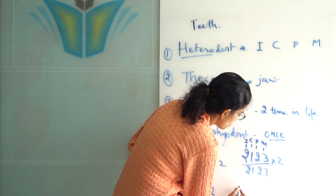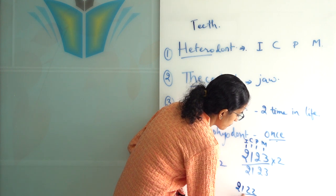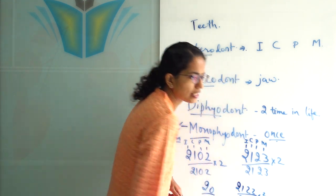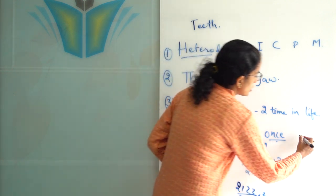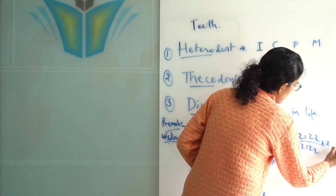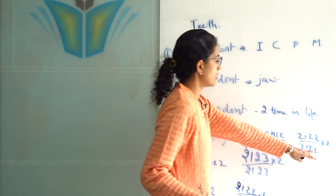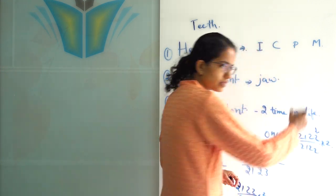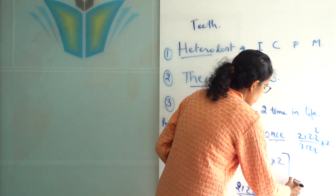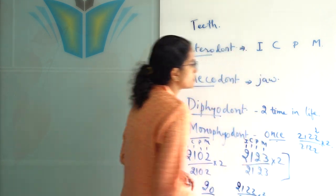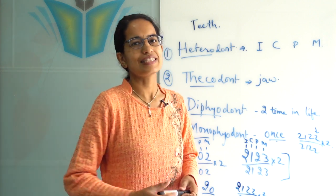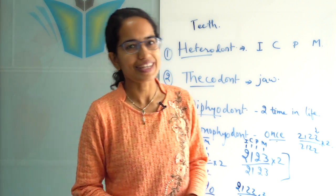For the adolescent age group, the dental formula is 2-1-2-2 over 2-1-2-2, multiplied by 2, where wisdom teeth are not counted. The standard adult formula is 2-1-2-3 over 2-1-2-3. We will be covering many interesting sessions in science — stay tuned and good luck.